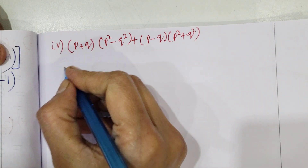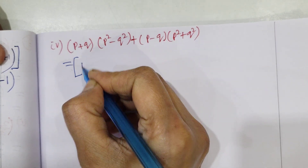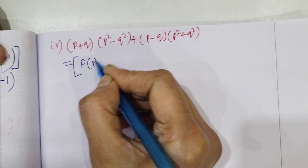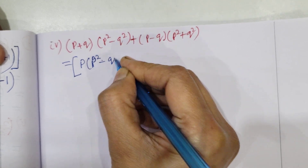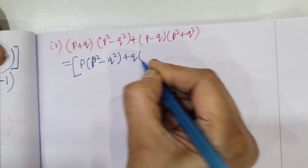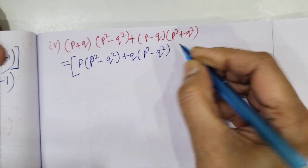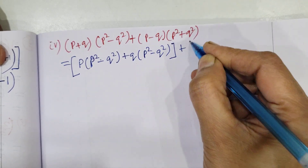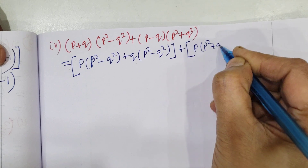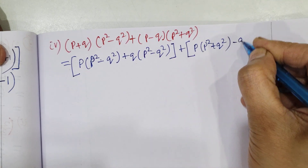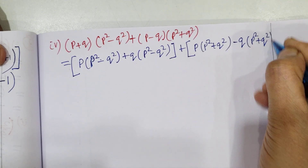The next question is equal to P(P² - Q²) + Q(P² - Q²) + P(P² + Q²) - Q(P² + Q²).